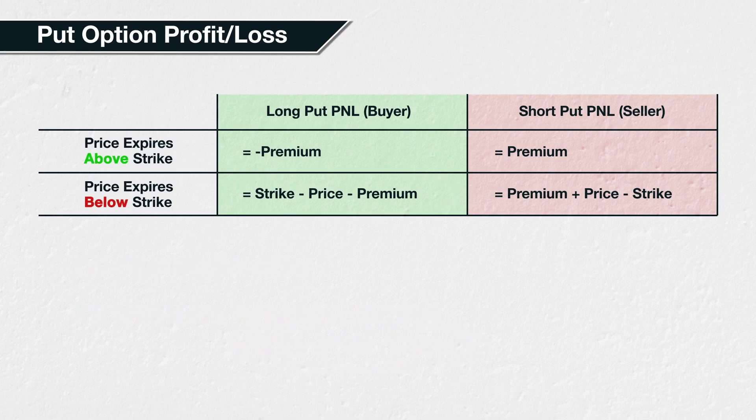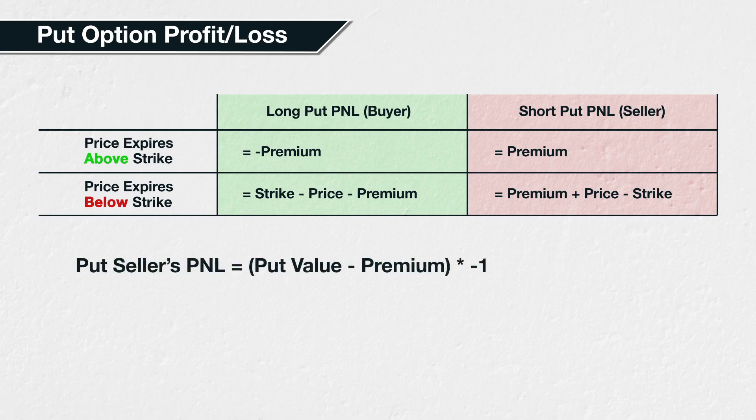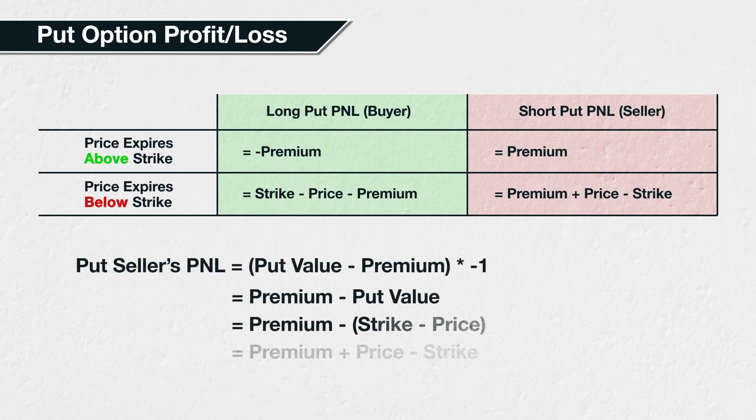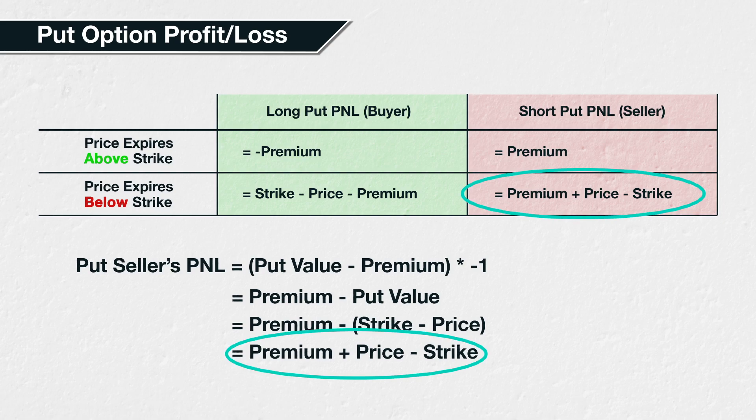The seller's PNL is of course just the negative of this, i.e. multiplied by minus one. So the seller's PNL can be calculated as premium minus put value, which equals the premium minus strike minus price, or the premium plus price minus strike.